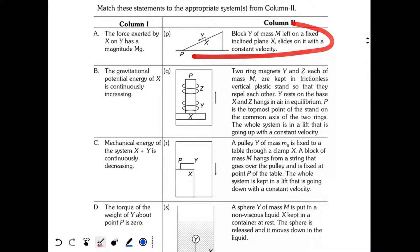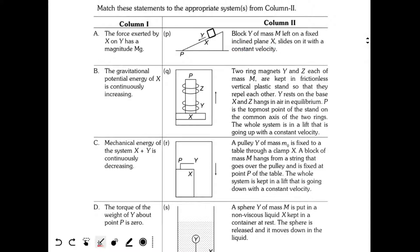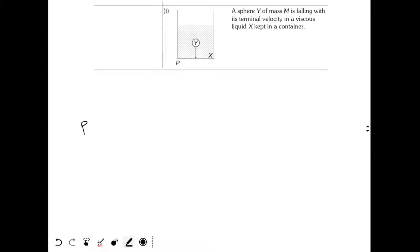Starting with situation P: block Y of mass M on a fixed inclined plane X slides with constant velocity. We have block Y sliding on inclined plane X with constant velocity. Since it slides with constant velocity, net force should be zero. Option A says the force exerted by X on Y has a magnitude Mg — let's check.